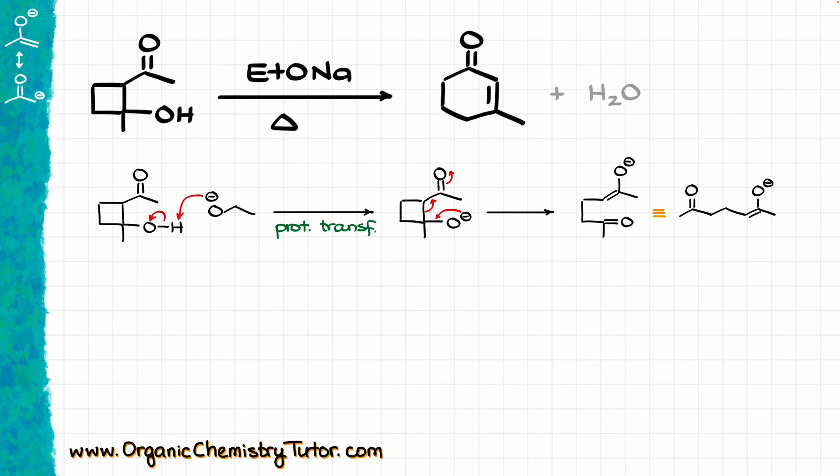Counting the carbons in this chain, I see that I have 1, 2, 3, 4, 5, 6, 7 carbons in this chain, which means that in order to re-close this ring into a 6-membered ring, I can no longer do this, because that brings me back to my 4-membered ring. So, that means that in order to close my 6-membered ring, I would have to re-enolize a different position in my molecule.